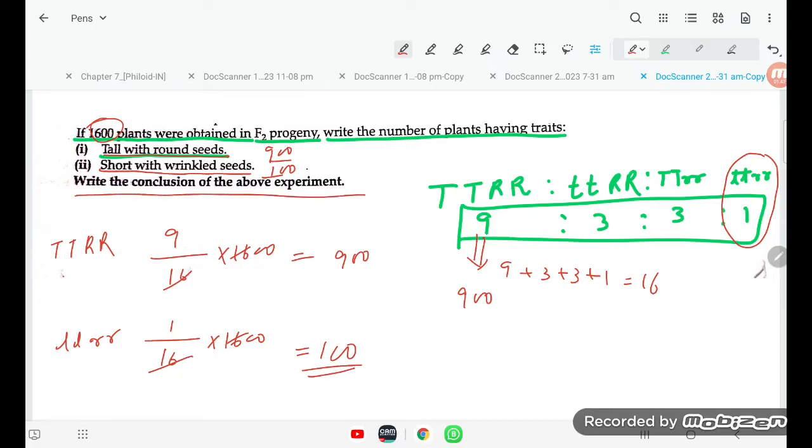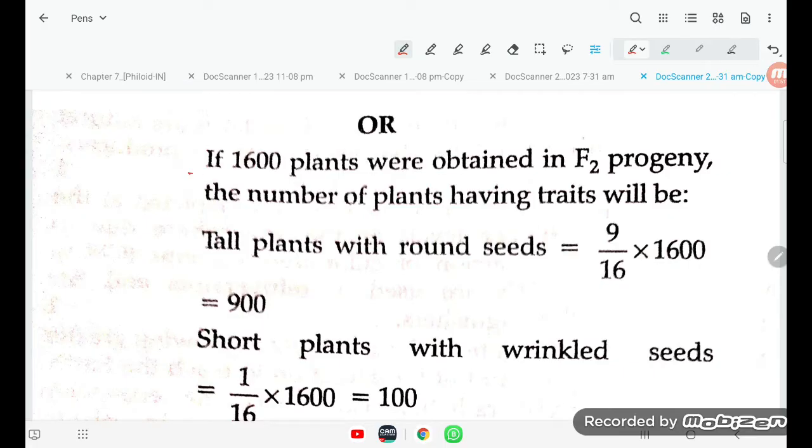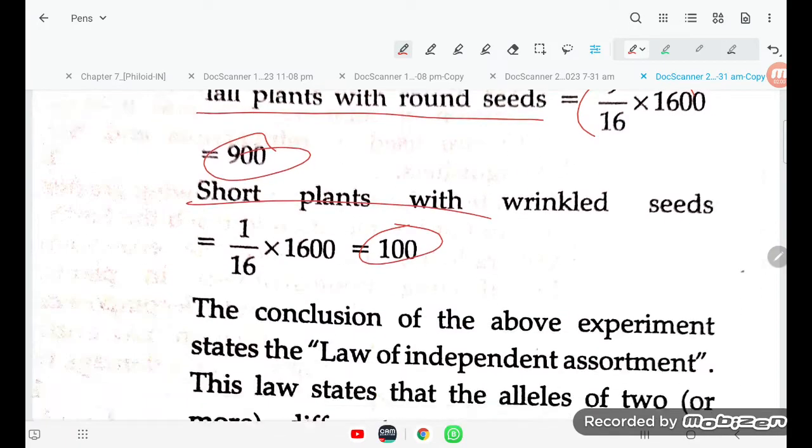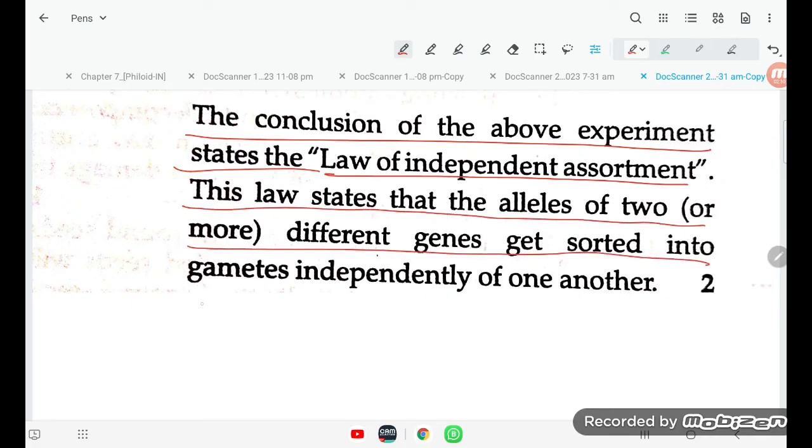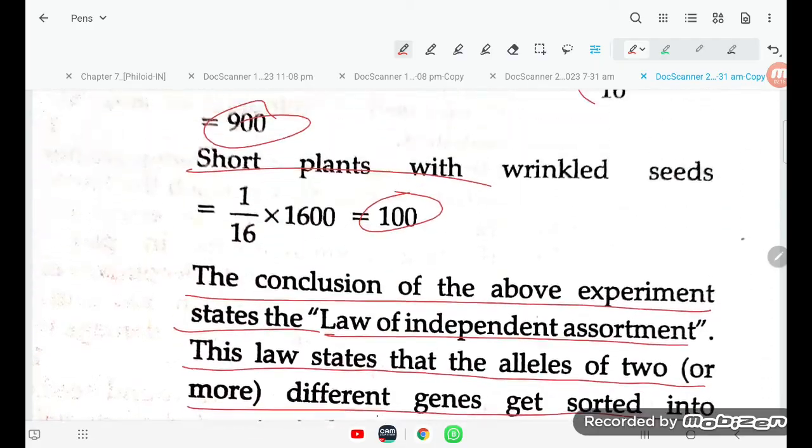Write the conclusion of above experiment. If the 1600 plants were obtained in F2 progeny, the number of plants having traits will be tall plants, this is 900, short plant 100. The conclusion of the above experiment states the law of independent assortment. This law states that alleles of two or more different genes get sorted into gametes independently of one another. So this is what the answer is, student.